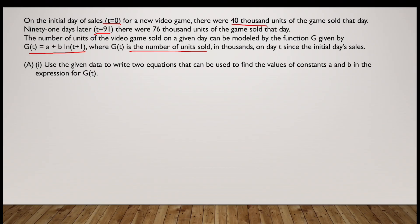Now the first question is use the given data to write two equations that can be used to find the values of constants a and b in the expression for G(t). In your FRQ2, I will guarantee you that you will have two values, one at t equal to some number x and one at t equal to some number y. Immediately when you look at the numbers, underline them as I've done here and underline their corresponding outputs. So t equal to 0 corresponds to 40,000 and t equals 91 corresponds to 76,000. Underline them immediately and underline the function that you have: G(t) equals a plus b times ln(t plus 1).